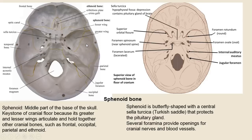The butterfly — I call it bat-shaped — and I mentioned the sella turcica, the turkey saddle. It protects the fragile pituitary gland.